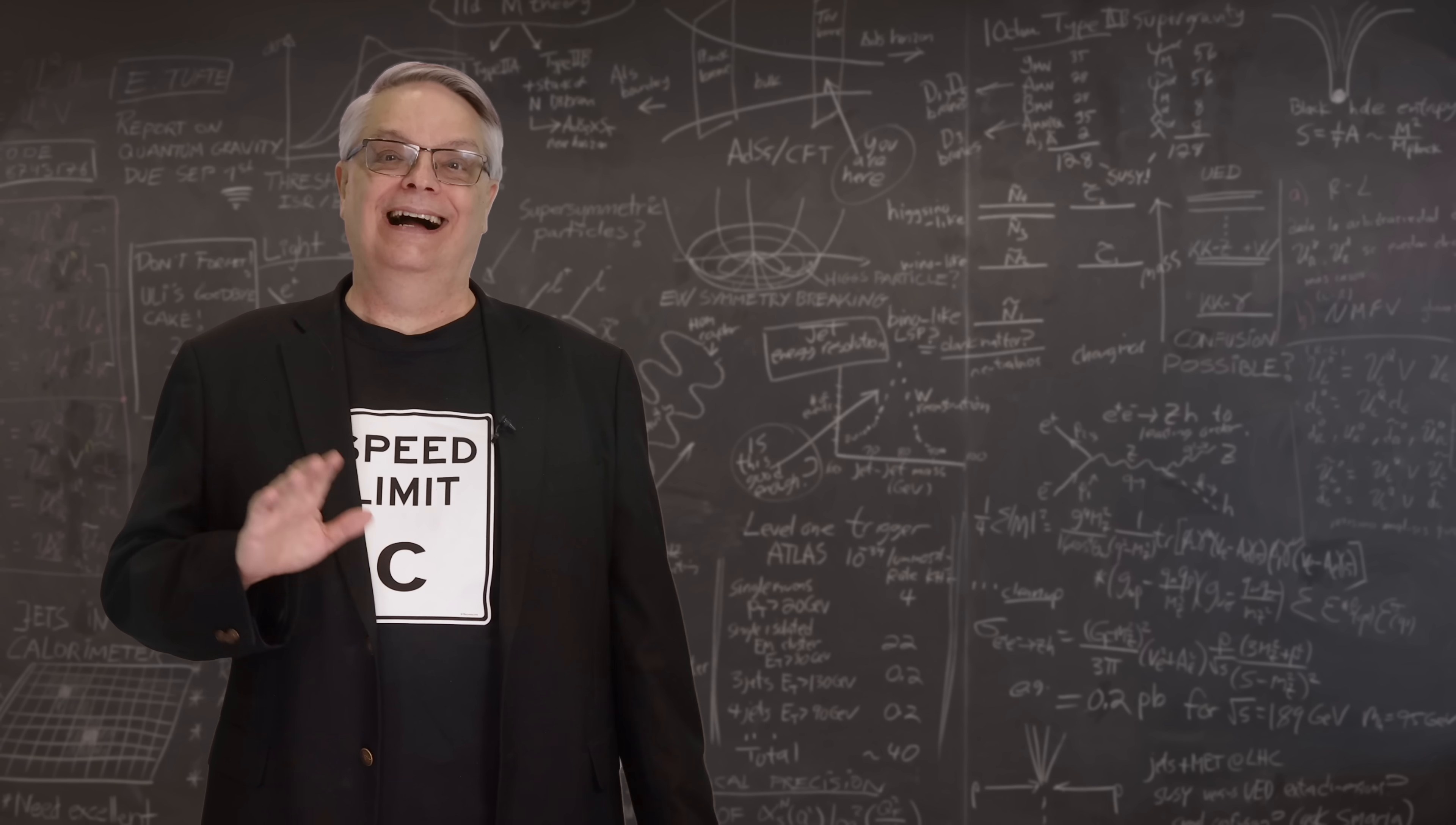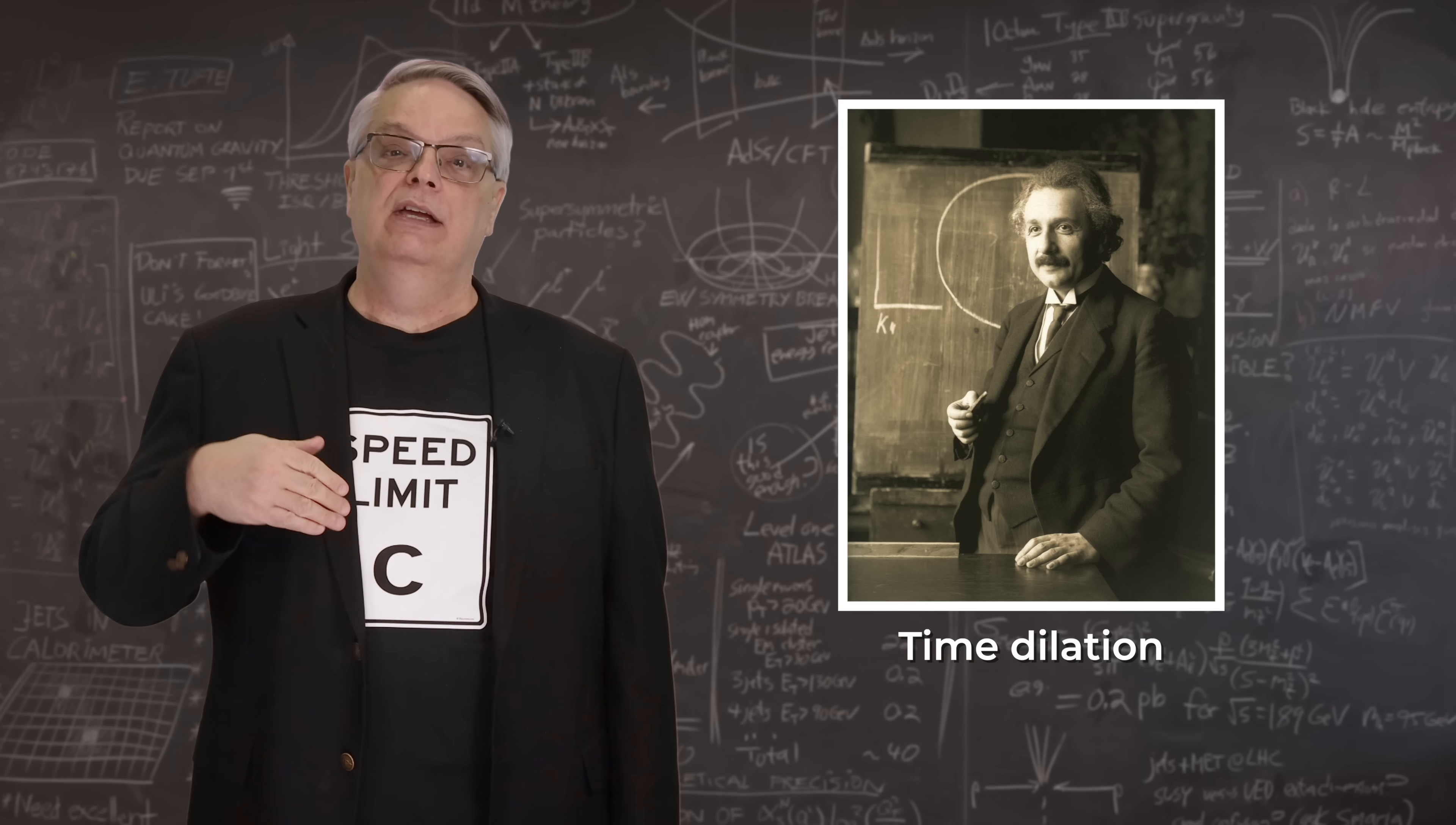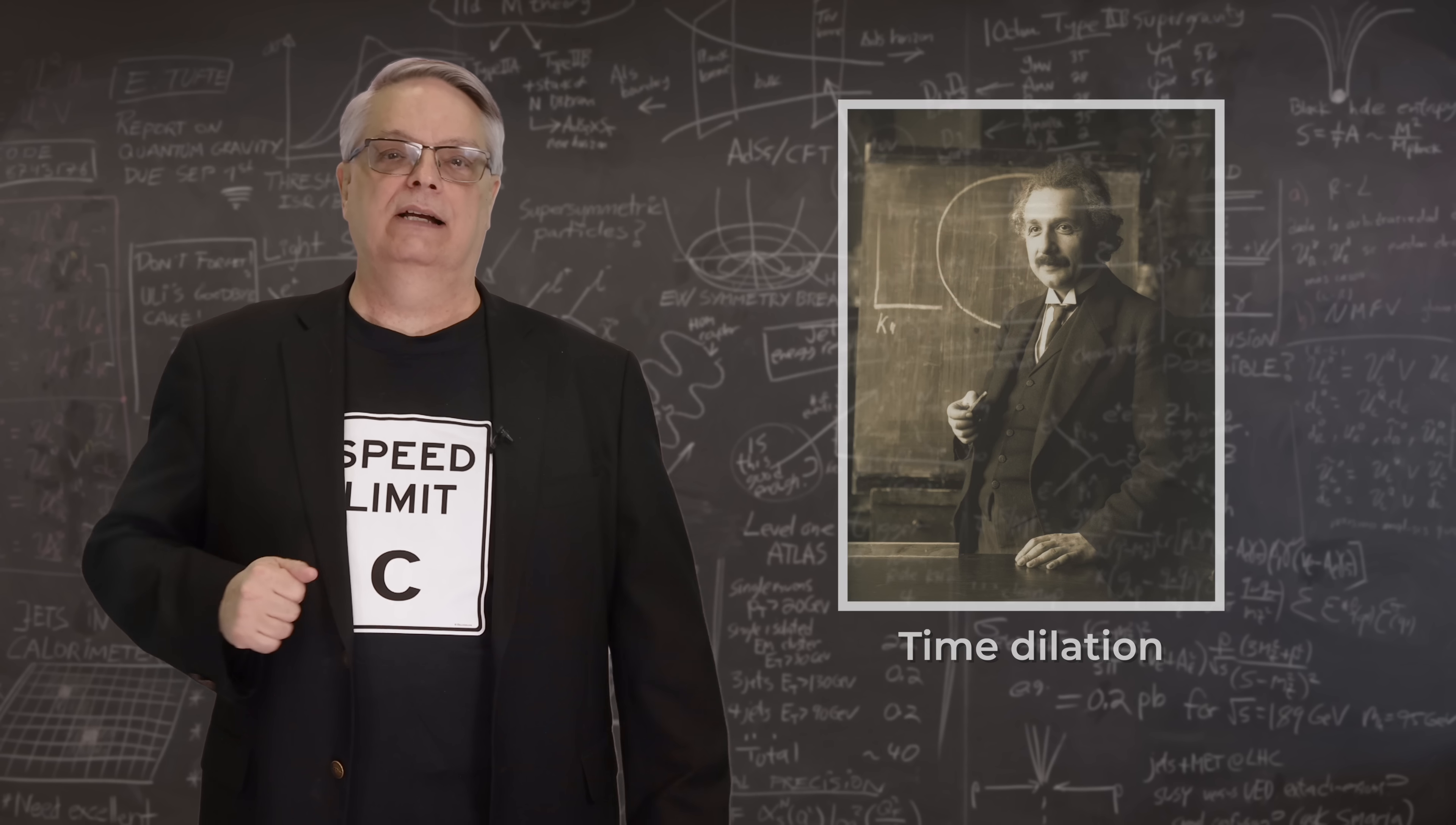It's a well-known feature that in Einstein's theory of relativity, different observers will experience time differently. Specifically, it's often claimed that an observer moving quickly will experience time more slowly than one that is stationary. This phenomenon is called time dilation.